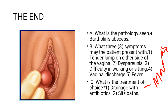Marsupialization involves draining the cyst, after which antibiotics may be given if the patient is systemically unwell or immunocompromised — though the literature notes it is not always necessary. Additionally, if the patient presents with a small asymptomatic cyst, sitz baths can be recommended. Even after marsupialization, sitz baths can still be advised, but the primary treatment of choice remains marsupialization with drainage.